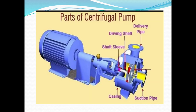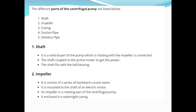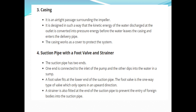We are using a casing, a suction pipe, a delivery pipe, a shaft and shaft sleeve — these are the important parts of the pump. The central rotating part is the impeller. The shaft connects power, and we use ball bearings. The impeller has a series of backward-curved vanes. This is the rotating part driven by the electric motor shaft. This is the watertight casing.